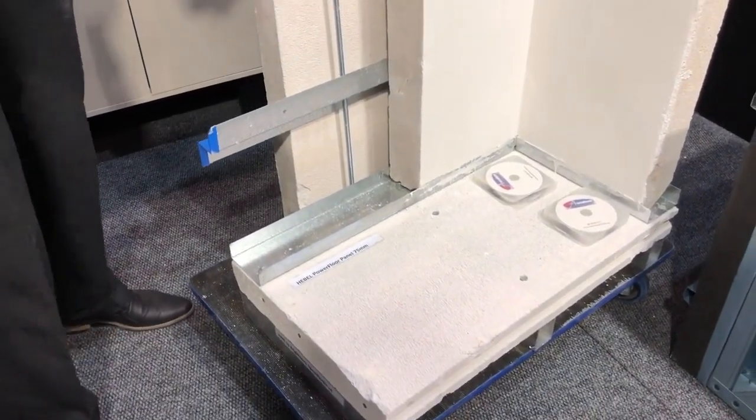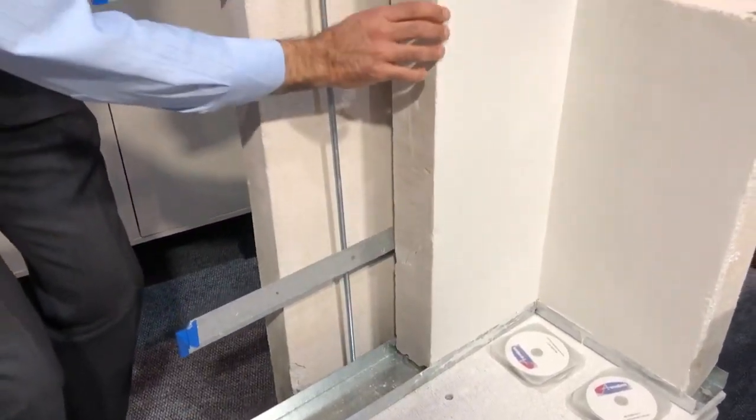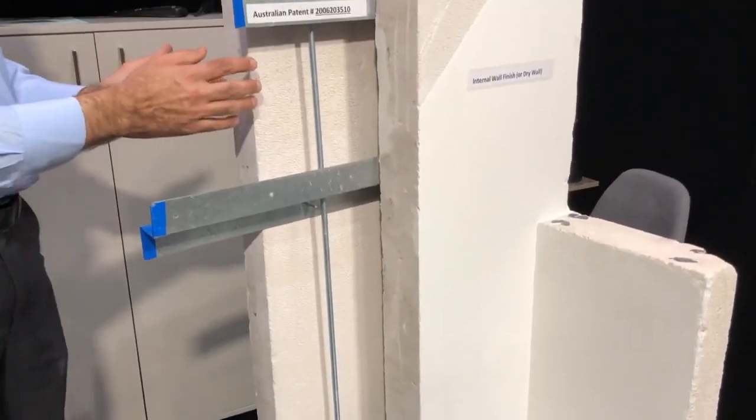If you are starting from your slab here, this is your slab, this is the bottom track, this is your internal wall, and this is the cavity and this is your external wall.